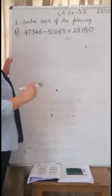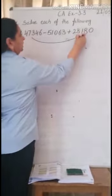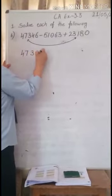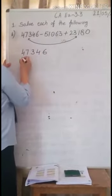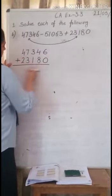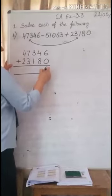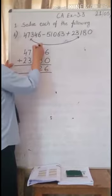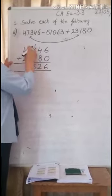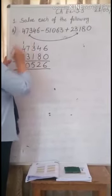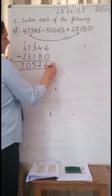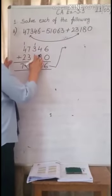According to BODMAS we will do addition first. We will add these two numbers: 47,346 and 23,180. 6 plus 0 is 6. 4 plus 8 is 12, write 2, carry 1. 3 plus 1 is 4, and 1 is 5. 7 plus 3 is 10, write 0, carry 1. 4 plus 2 is 6, and 1 is 7. The sum is 70,526.